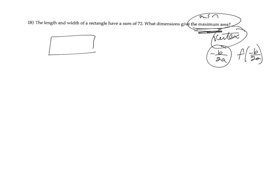I have a rectangle, and it says the length and the width have a sum of 72. So the length plus the width must equal 72. Now, I want to know what the area is. So the area of any rectangle is length times width, and I want to get this area to be a maximum.